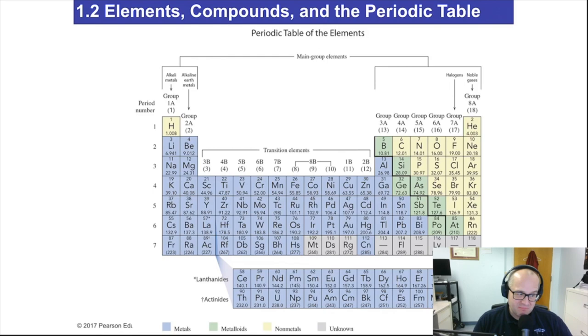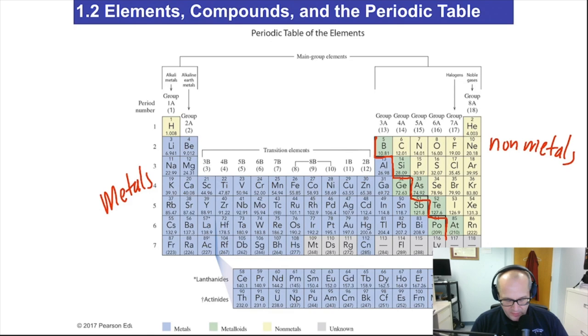So here's a periodic table. Now you can see there's a lot of information on this thing. You can easily get lost in a periodic table if you don't just kind of calm down and let yourself learn about it. Now, remember I told you about the zigzag line, right? There it is right there. There's the zigzag line, also known as the staircase. Separates metals from non-metals.